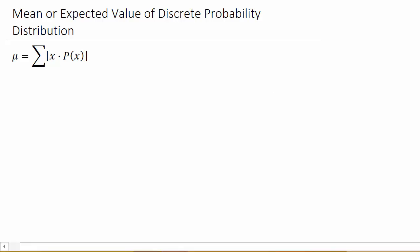So this video we're going to look at finding the mean or expected value of a discrete probability distribution. So here's the formula for the mean. It's the sum of x times p of x. P of x is the probability.